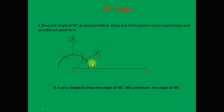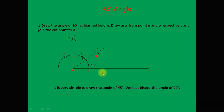Dear students, note that for a 30 degree angle, bisect the angle of 60 degrees. And for a 45 degree angle, bisect the angle of 90 degrees.